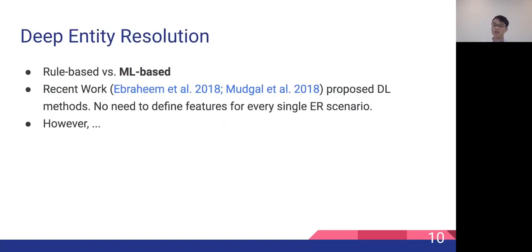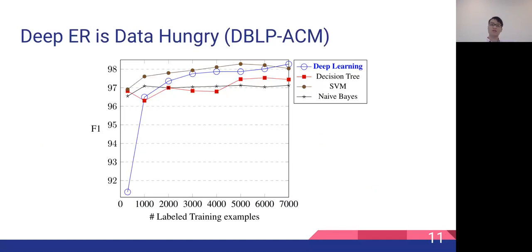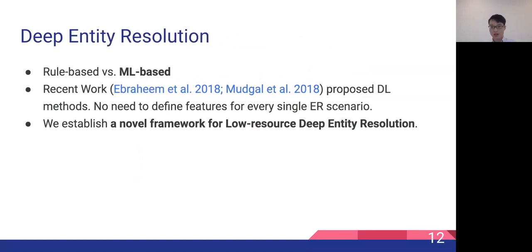In this work, we focus on machine learning-based approaches, and in particular, recent deep learning-based solutions. These models have the benefit of avoiding the need for defining features for every single entity resolution scenario, because we use distributed representations instead of feature engineering. However, deep learning-based models require many labeled examples to outperform other learning algorithms such as SVM and Naive Bayes. Only after we get enough labels does the deep learning method outperform the others. To address this issue of data hungriness, this work establishes a novel framework for low-resource deep entity resolution.